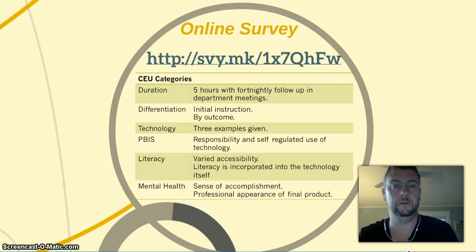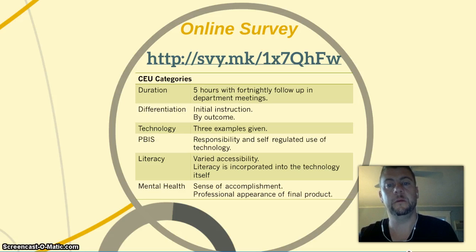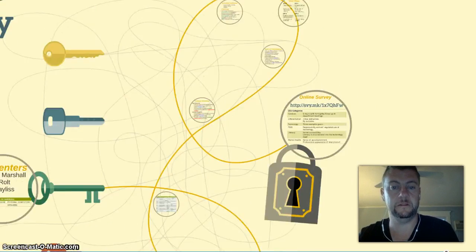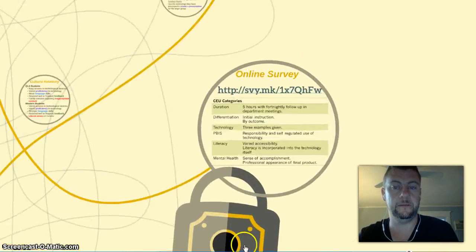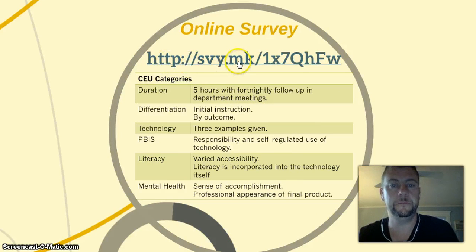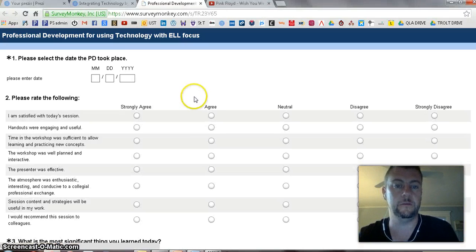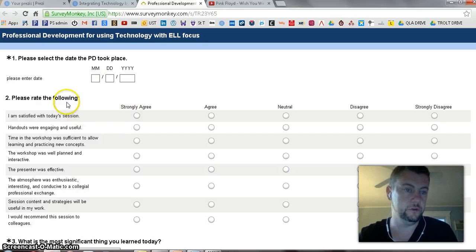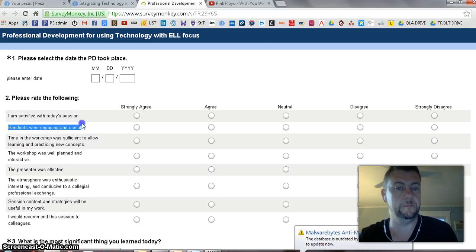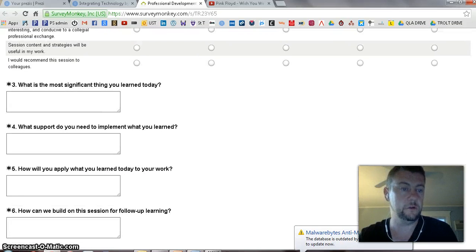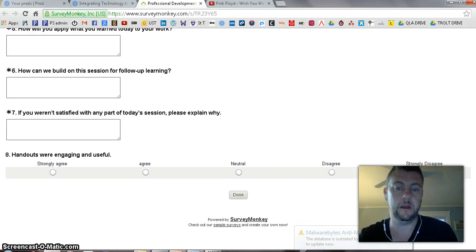Lastly, we want to highlight the duration and the categories: differentiation, technology, PBIS, literacy, and mental health. We feel the professional development we would deliver would certainly cover all of these main areas. To ensure we have an excellent outcome, we have our own online SurveyMonkey, which allows us to choose how strongly we agreed with the presentation. This gives us clear feedback from both students and, as you can see scrolling down, from teachers as well.